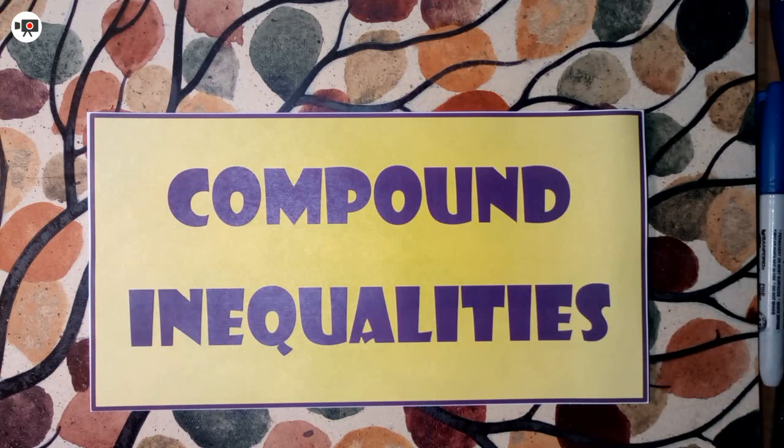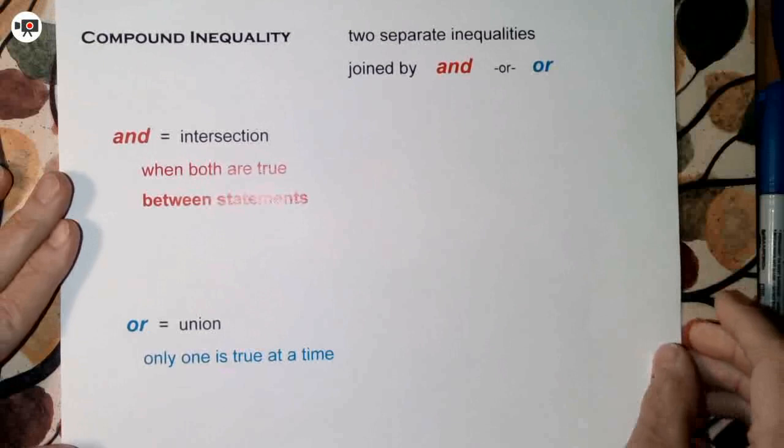This is a High School Algebra 1 lesson about compound inequalities — two inequalities with the same variable that are written together, are true together, and are put on the same graph. Compound inequalities are two separate inequalities joined by AND or OR.